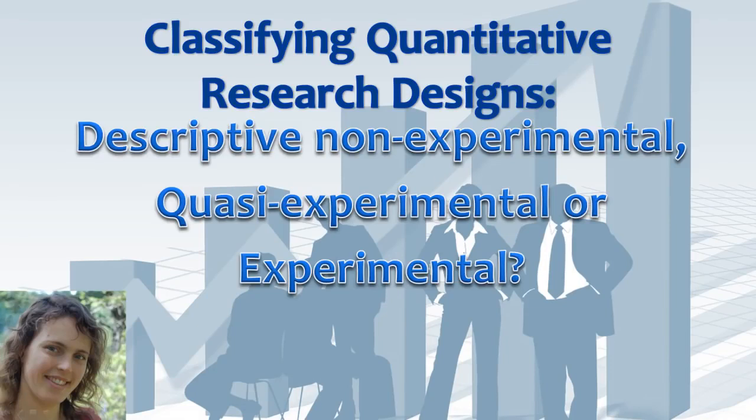Students often have difficulty classifying quantitative research designs. In quantitative research, designs can be classified into one of three categories: descriptive non-experimental, quasi-experimental, or experimental. To identify which of these designs your study is using, follow the steps in this video.